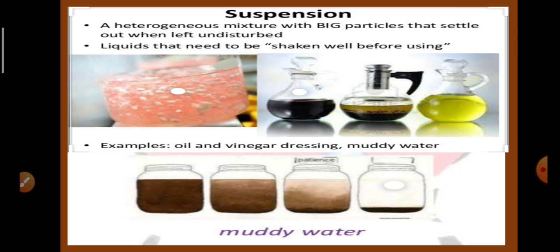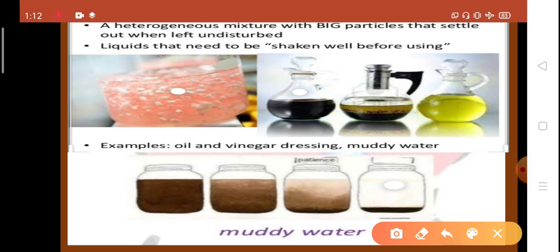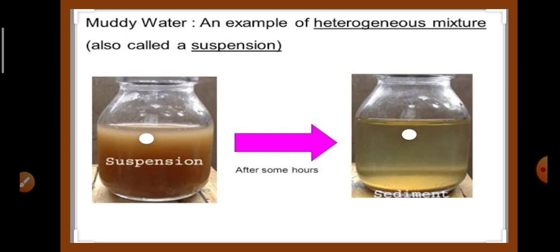Now, heterogeneous mixture is again of two types. The first one is suspension. What is it? It is a heterogeneous mixture with big particles that settle out when left undisturbed. Liquids that need to be shaken well before using. Example, oil and vinegar dressing, muddy water. Muddy water is an example of heterogeneous mixture. So, it is also known as suspension. In this, we can see after some time, the bigger particles have come down and settled at the bottom of the container.